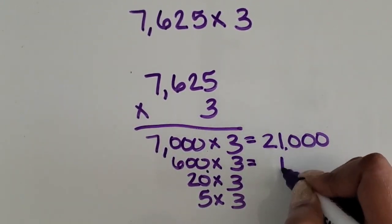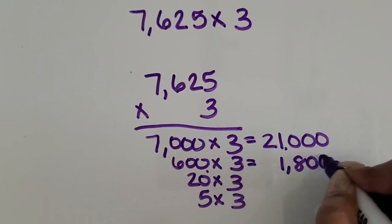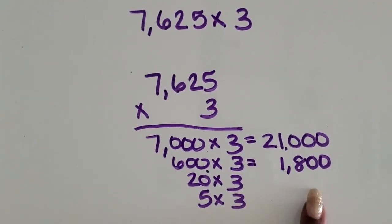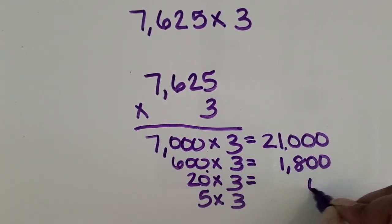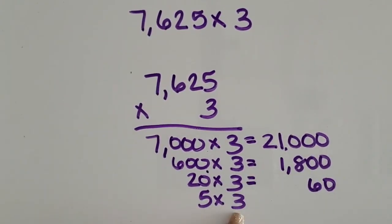Sometimes students won't know until they find the product how many digits is in that product. Twenty times three I know is 60, so that's going to be two digits. And then five times three is 15, which will also be two digits.